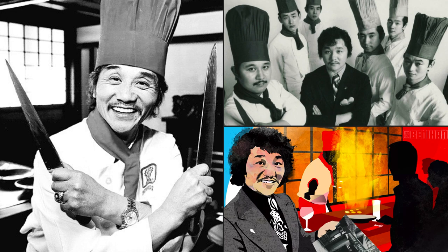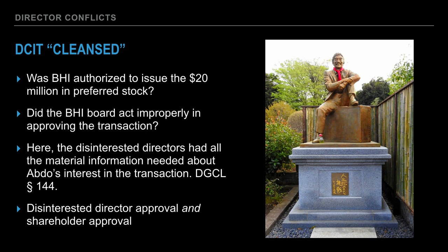Is our restaurateur-wrestler going to prevail? Was BHI authorized to issue the $20 million in stock? Did the BHI board act improperly? Yes, Benihana Inc. was authorized — and no, the BHI board did not act improperly. The disinterested directors had all the material information they needed about Abdo's interest in the transaction. The disinterested directors approved, and disinterested shareholders approved, resulting in an effective approval and ratification of this transaction. Sorry, Rocky — you lost this round. This is a story about process. This is a story about the board going through an appropriate process and as a result enjoying the safe harbor of DGCL Section 144.